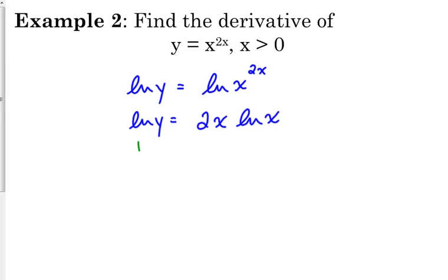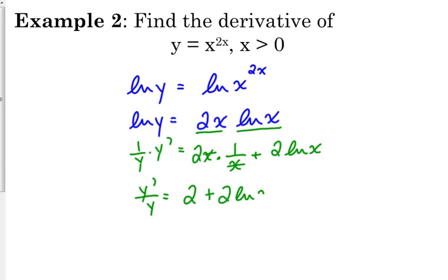Now we can take the derivative. The derivative of the natural log of y is 1 over y times y prime. What do you have to use on the right side? Product rule. 2x times the natural log of x, so first times the derivative of the second plus derivative of the first times the second. It's nice - we've got some simplifying we can do here. The x's cancel there, so we have 2 plus 2 natural log of x.